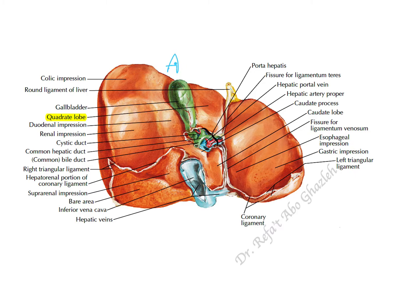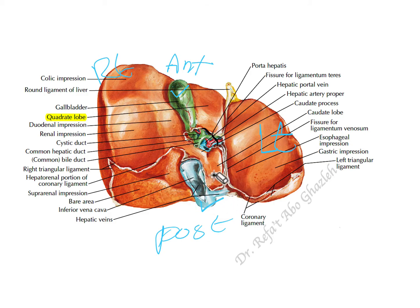On the visceral surface, anterior is the gallbladder and posterior is the inferior vena cava. To summarize: most anteriorly are the right and left hepatic ducts, in the middle are the right and left hepatic arteries, and most posteriorly is the hepatic portal vein.